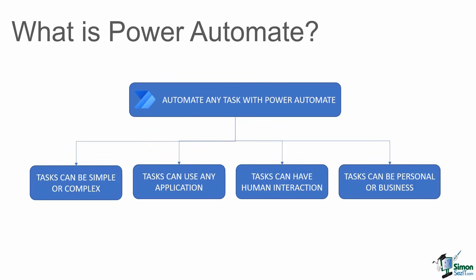The beauty of Power Automate is that there are literally hundreds of default connectors to other applications, and this is going to enable you to create workflows for tasks that use different applications. And if you can't find a connector to the specific application you're looking for, Power Automate allows you to connect to those applications using third-party API tools.